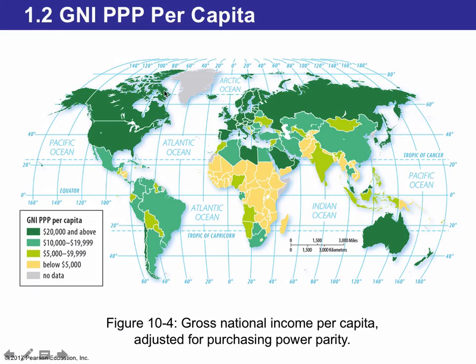Looking at GNI — how much money people make on average per capita — the Northern Hemisphere has the most GNI per capita. The Southern Hemisphere, specifically Sub-Saharan Africa, has the lowest GNI per capita. This means that most people in these regions make very low incomes compared to people in more developed regions, which have higher GNI per capita.